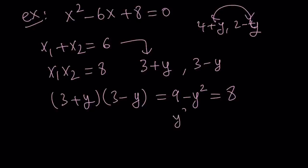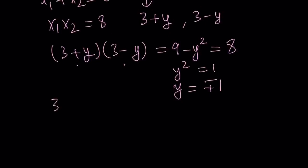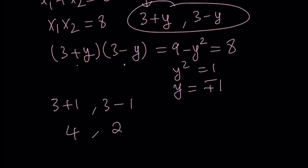So y squared equals 1. This gives us two solutions. Let's write it as plus minus 1. We can safely say that the solutions are 3 plus 1 and 3 minus 1. Those are the y values we found, and we just plug them in. That means the solutions are 4 and 2 to this equation.